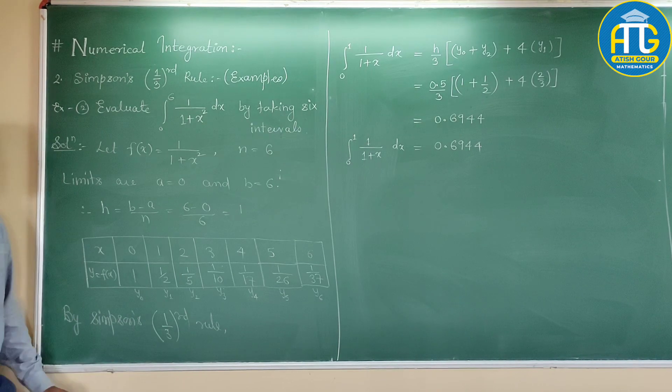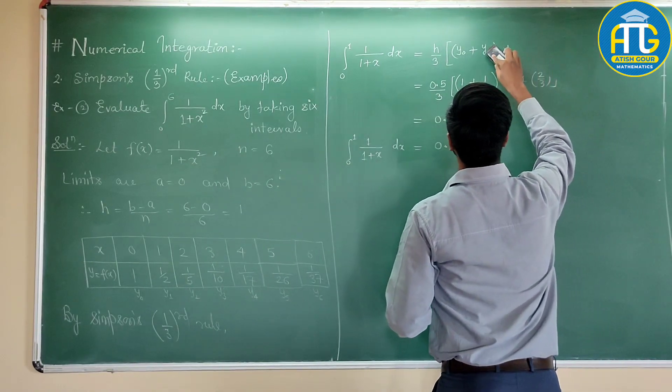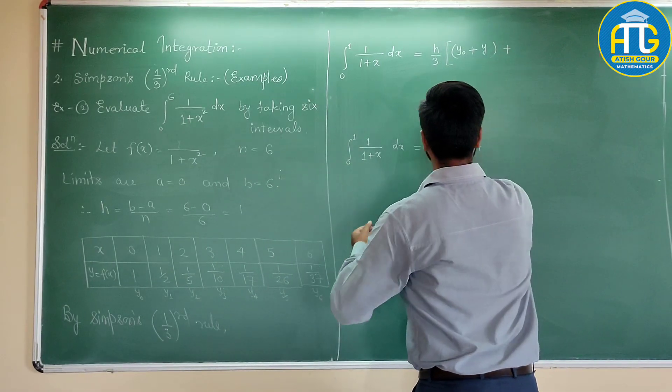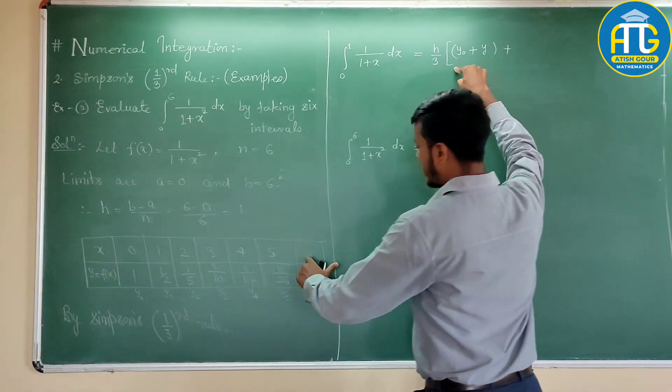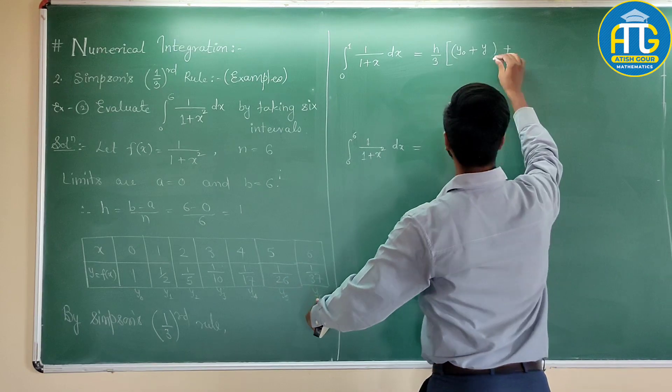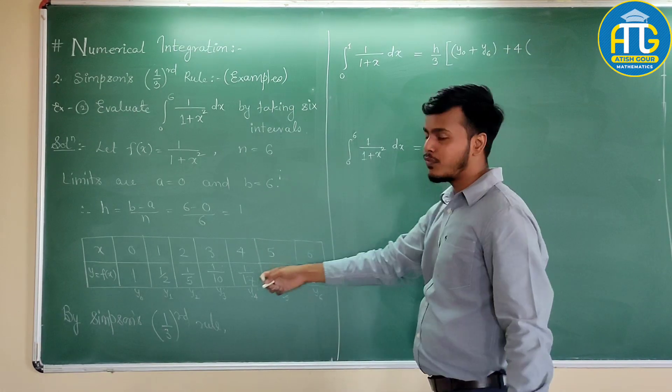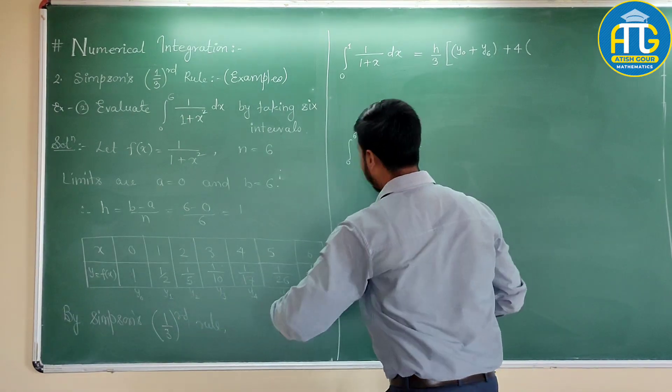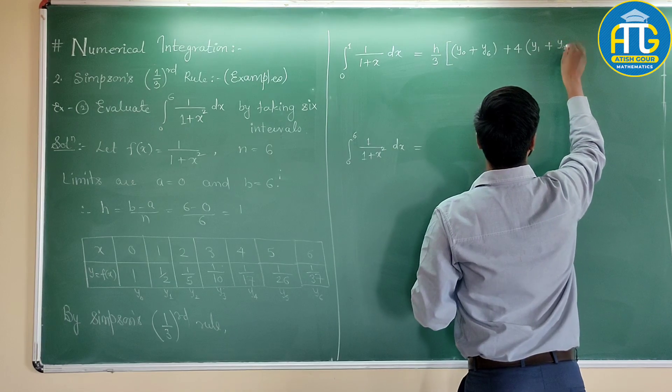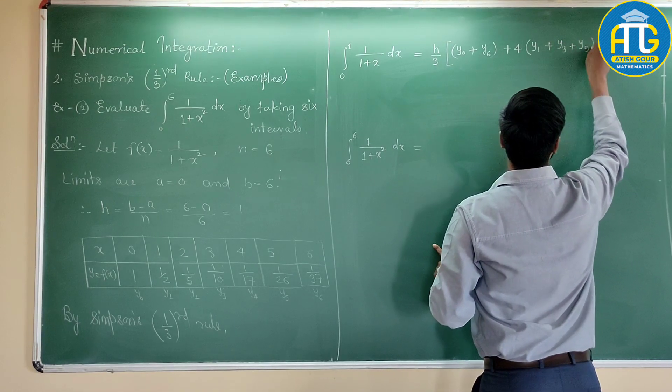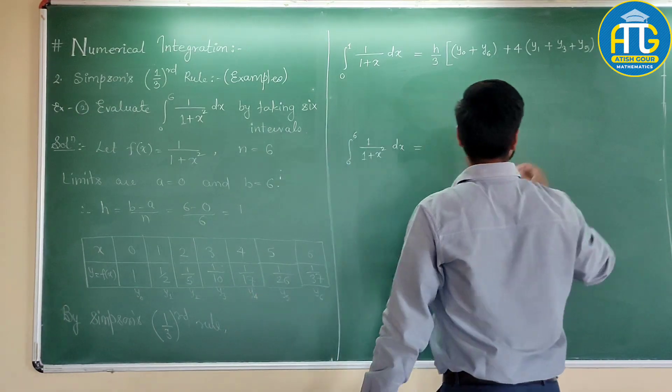Now use Simpson's one third rule for this data. It would be h by 3, y0 plus y6, plus 4 times values of y with odd suffixes, that is 1, 3 and 5: y1, y3, y5, plus 2 times the value of y with even suffixes, that is y2 and y4.